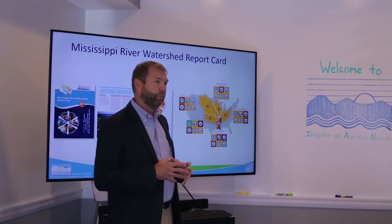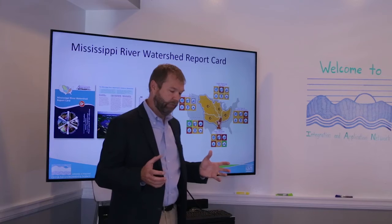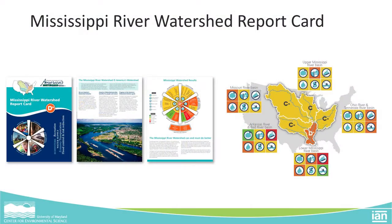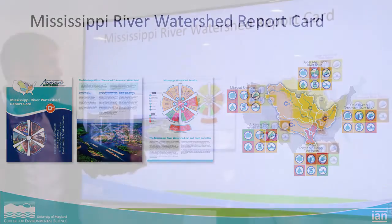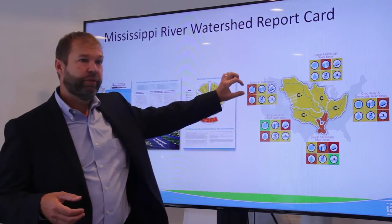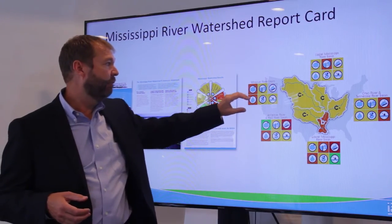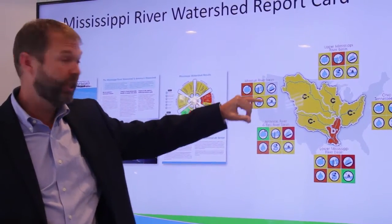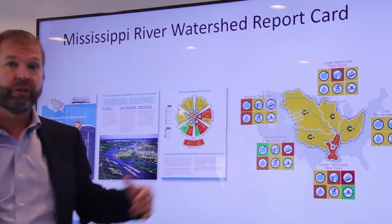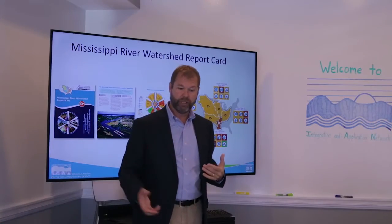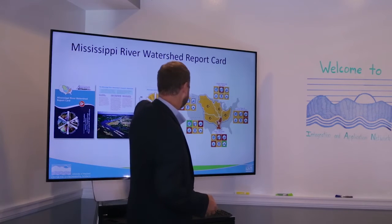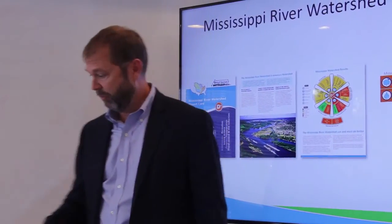The first time we really broke the mold and started a more holistic approach was the Mississippi River Watershed report card, released in 2015. Instead of just focusing on ecosystem results, we added societal factors that people really care about: flood control, transportation, recreation, economy, and water supply for people, agriculture, and industry. We have results for each one of these sectors in the Mississippi River report card.